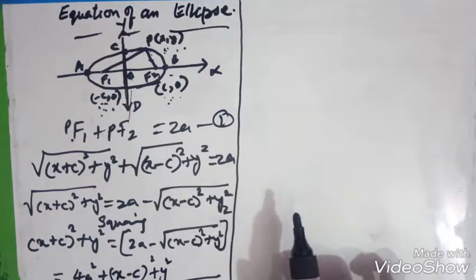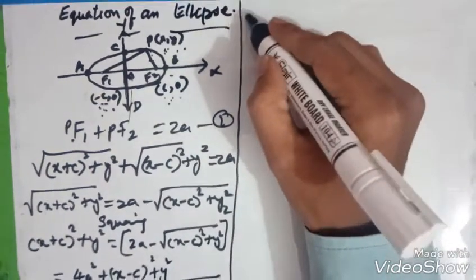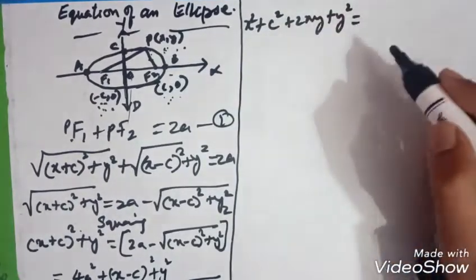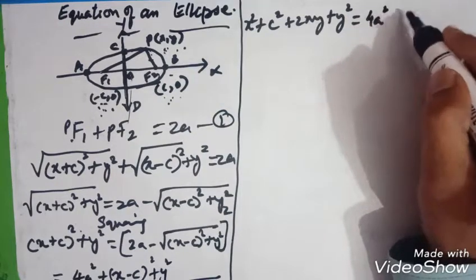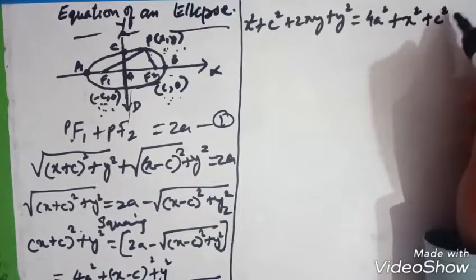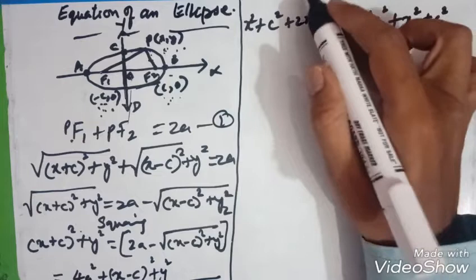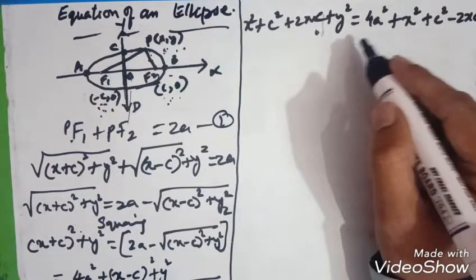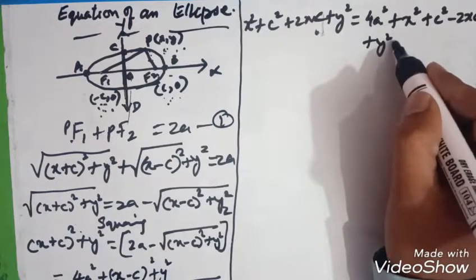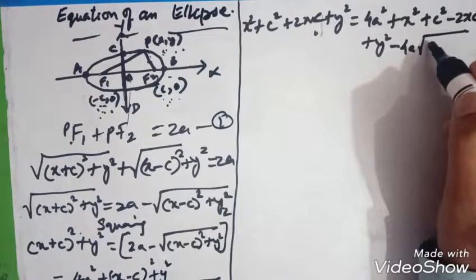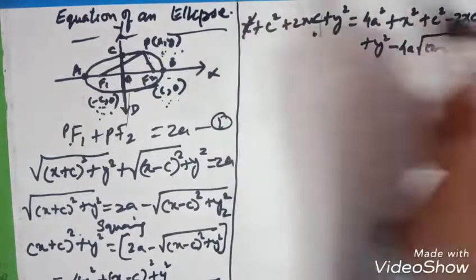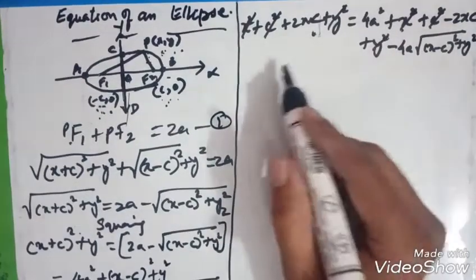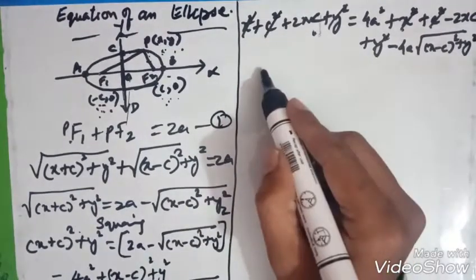Now expanding both sides: the left side (x + C)² + y² gives x² + C² + 2XC + y². The right side gives 4A² + x² + C² − 2XC + y² − 4A·√[(x − C)² + y²]. The x², C², and y² terms cancel from both sides, leaving us with the remaining terms to be rearranged.